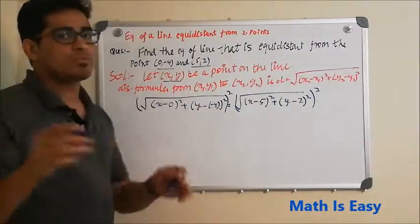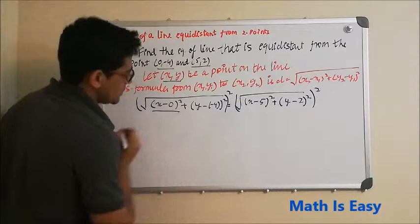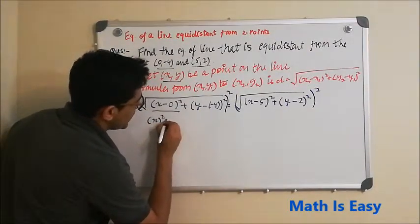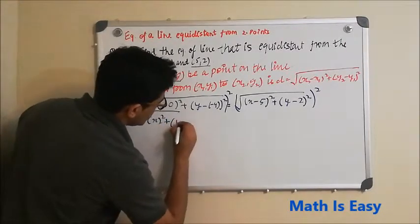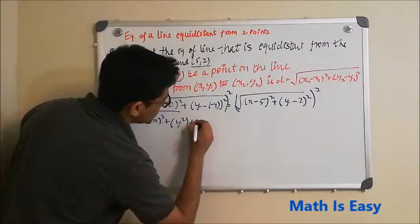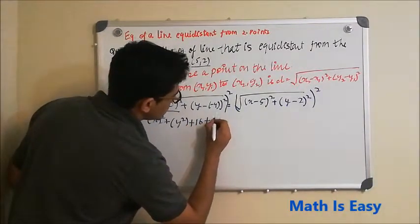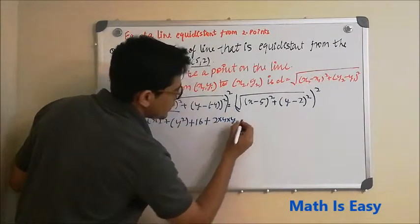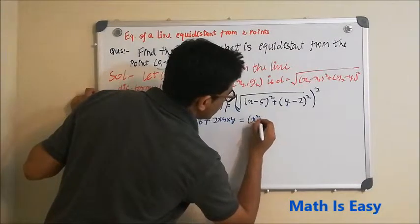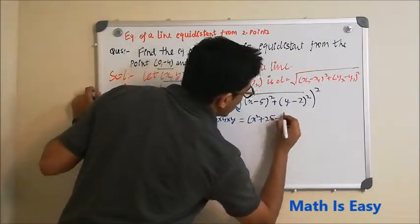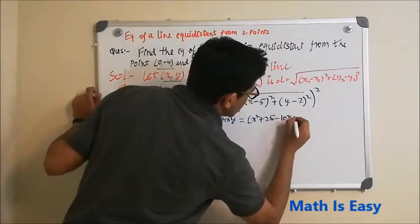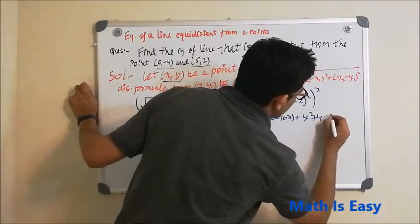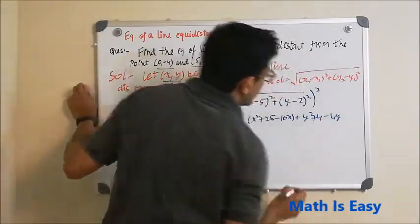Now we open this equation which is x² and then we solve this one which is y² + 16 + 2×4×y equals x² + 25 - 10x + y² + 4 - 4y. Here we just open the brackets by using (a + b)² or (a - b)² depending upon the sign in the equation.